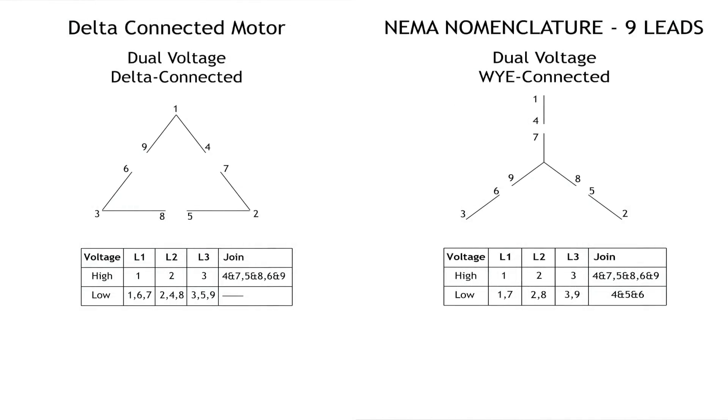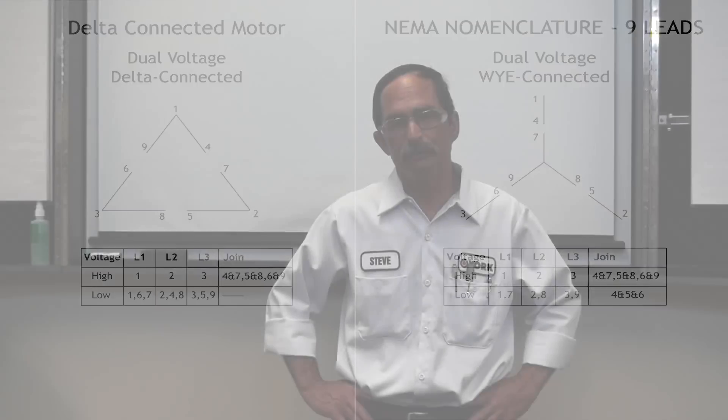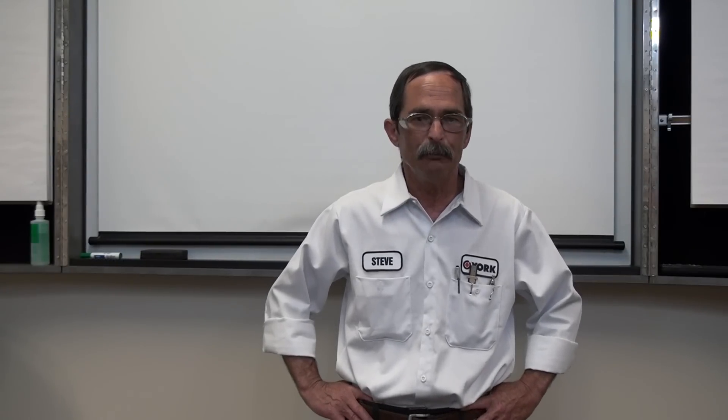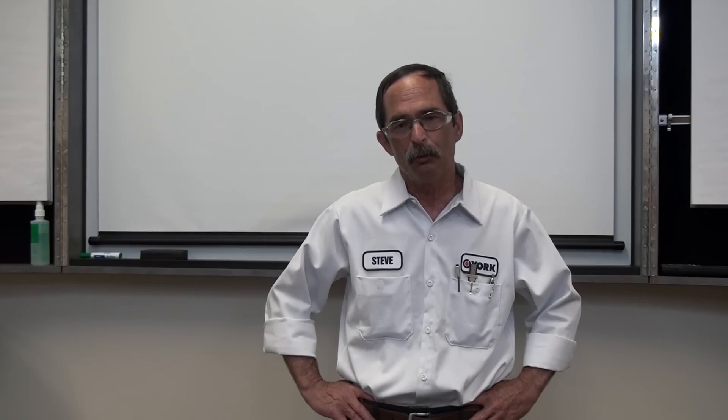If we're missing a number on one of our leads, by looking at the actual configuration and checking for continuity we can have a good idea which number is missing. If say one and four have continuity, and you've got a one but you're missing number four, then we know that the lead with continuity with number one is number four. If you're missing both numbers in the same phase, then we've got to do this completely differently.